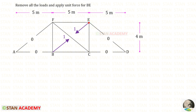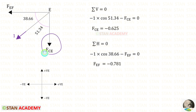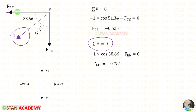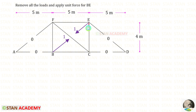Now let us take joint E and find the member forces. ED is the zero force member, so no need to take that. First we apply sigma V equals 0. The unit force is inclined — we resolve it in the vertical direction using cos 51.34. It will be acting downwards, so it will be negative. FCE is acting downwards, so it is also negative. For FCE we will get minus 0.625. Then applying sigma H equals 0: the unit force is inclined, resolved horizontally using cos 38.66, acting towards the left side so it will be negative. FEF is also acting towards the left side, so it is also negative. For FEF we will get the computed value.